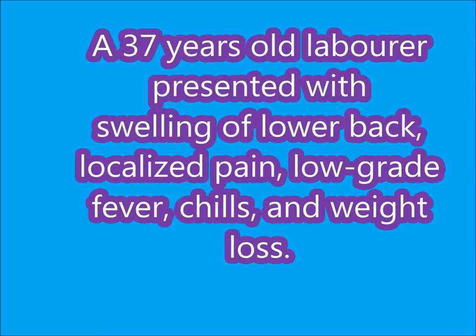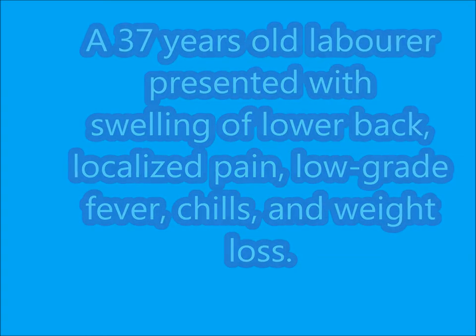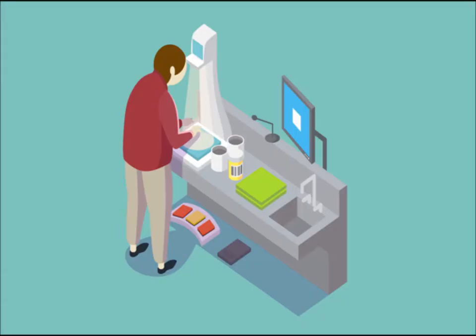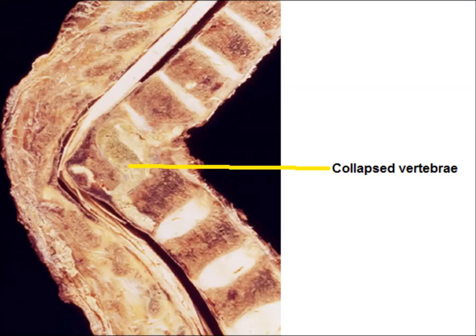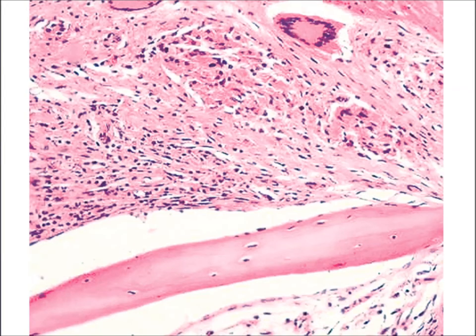Now we can inspect the gross specimen. Here you can see the vertebral column showing collapse of vertebrae and producing kyphosis. If we see the bone biopsy under the microscope, there is granulomatous inflammation with multinucleated giant cells.